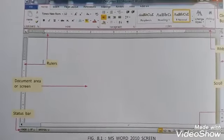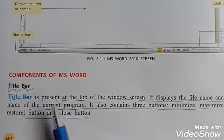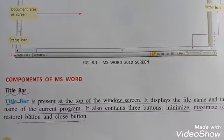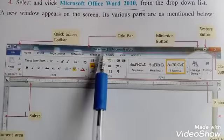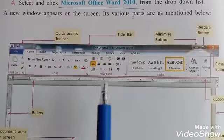Now we are going to discuss the components of MS Word in detail. First one is Title Bar. Title Bar is present at the top of the window and it displays the name of the opened file. It also contains three buttons: Minimize, Maximize, and Close button.